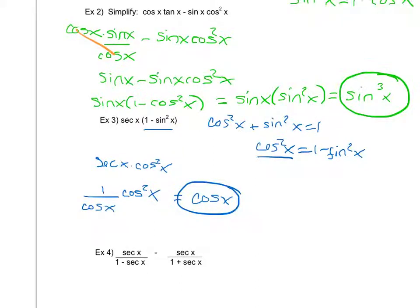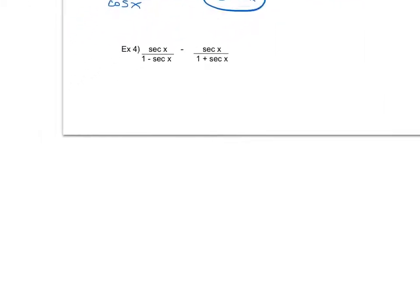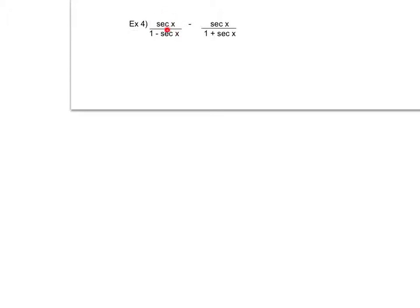Let's look at one final example where we're going to try to get a simpler expression. This is probably the most difficult of the examples. I have secant x over one minus secant x, minus secant x over one plus secant x. My instinct to change to sines and cosines is going to be put on hold because that would make these fractions very messy. Instead, I'm going to start by trying to get a common denominator by multiplying the current denominators together.